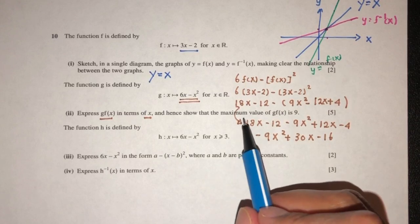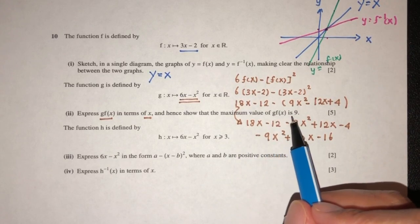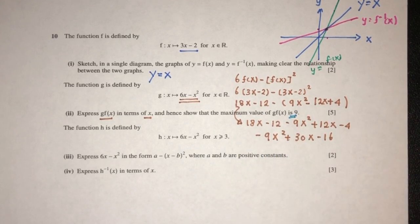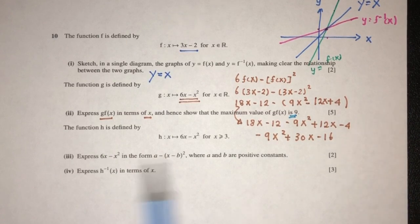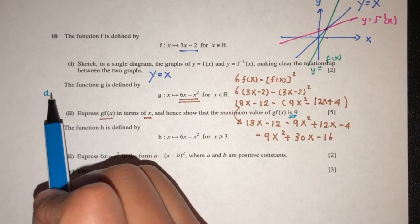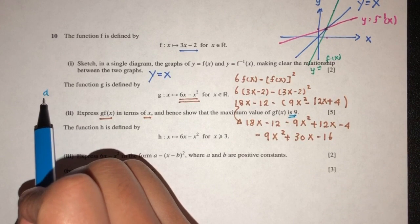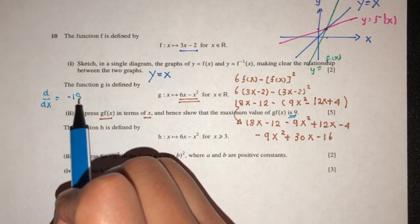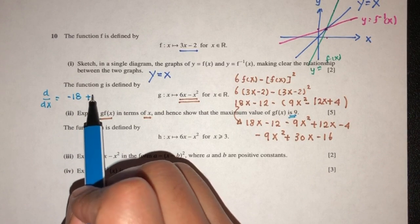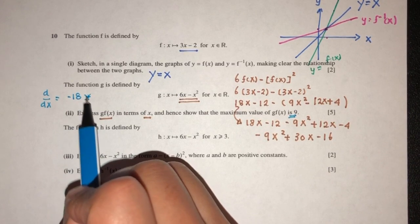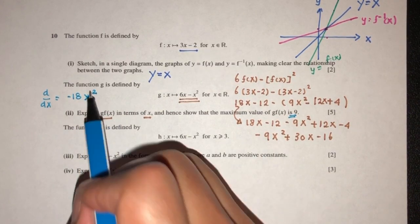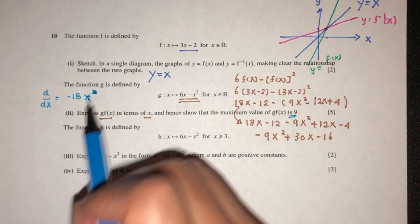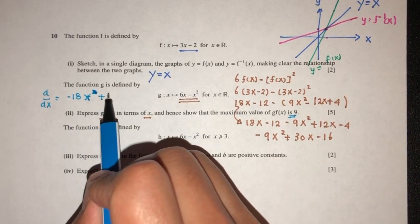And then show the maximum value of g(x) is this. So how do you find the maximum value? You know it is found by first we have to find d by dx of this. That will give you minus 18x, so minus 18x. That will be minus 18x. And then we have plus 30.